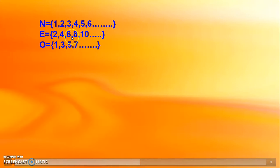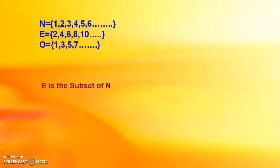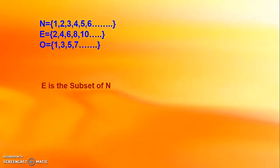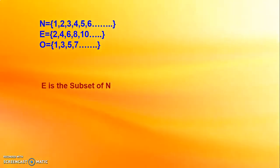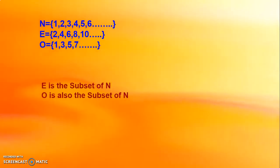Observe set O. You can see these odd numbers 1, 3, 5, 7 are also present in the set of natural numbers. Now compare sets E and O — do you see that the elements of set O are in set E? No. The elements of set E are present in set N, and the elements of set O are also present in set N. Therefore, E is the subset of N, because each and every element of set E is in the set of natural numbers N. We also observe that O is a subset of N.